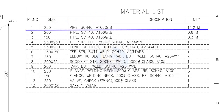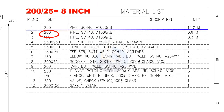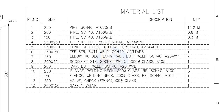Let us try another example. What is the inch size of the 200 NB pipe? Divide 200 by 25 — the answer is 8 inches. Parts number 1 to 3 are all schedule 40 pipes.